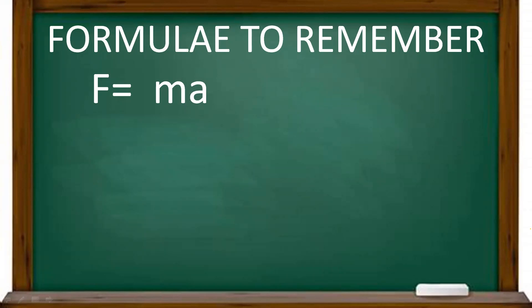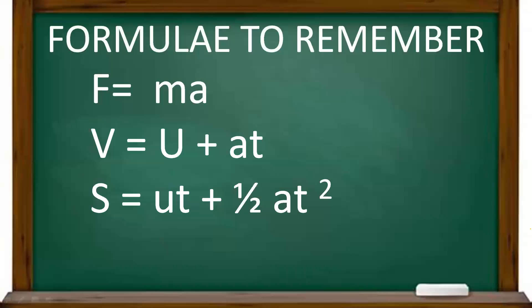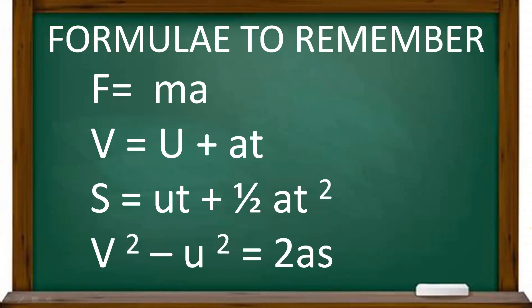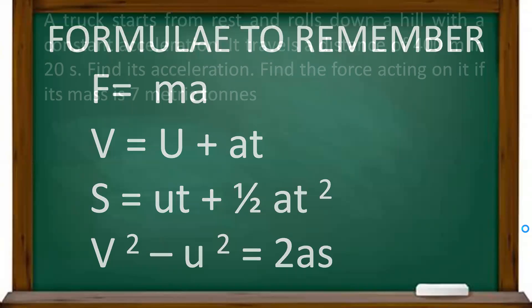What are the three equations of motion? V is equal to u plus at, s is equal to ut plus half at squared, and v squared minus u squared equal to 2as. So we will learn these three formulas and how to solve using them.